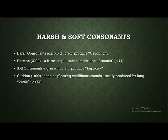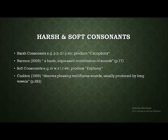Euphony denotes pleasing, mellifluous sounds, usually produced by long vowels. So if we want to produce very soft and pleasing sounds, we have to use soft consonants along with long vowels. Such words produce the effect of euphony — the words sound pleasing and musical to our ears. If you want to talk about an unpleasant and harsh experience, you would use harsh consonants, producing words that create unpleasant and harsh sounds — the effect of cacophony.